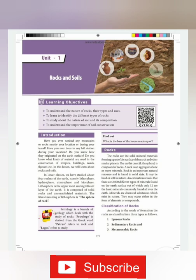Rocks are the solid materials forming a part of the surface of the earth and other similar planets. The earth's crust — the upper layer, also called the lithosphere — is composed of rocks. A rock is an aggregate of one or more minerals; it is not composed of any single material but a total of many minerals combined. Rock is an important natural resource and is found in solid state.